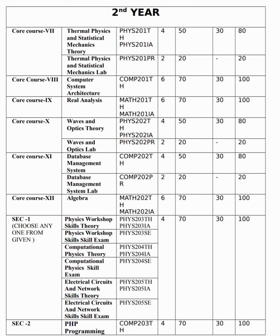The first skill enhancement course is from physics, in which you have to study any one from the given six courses. The second skill enhancement course is from computer science and it is PHP Programming, which is again a theory-based subject with no practical. So in second year you have to study three subjects from computer science: Computer System Architecture, Database Management System, and PHP Programming.